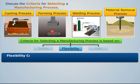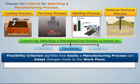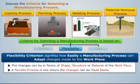The flexibility criterion signifies how easily a manufacturing process can adapt to changes made to the workpiece. The changes can be in terms of shape, structure, or material of the workpiece. A flexible process is one where these changes can be made easily.